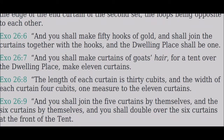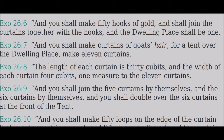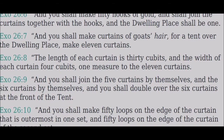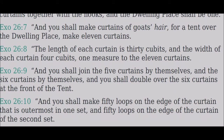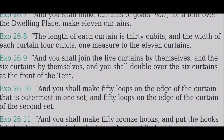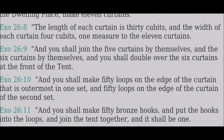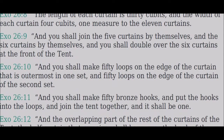Make curtains of goat's hair for a tent over the dwelling place — make eleven curtains. The length of each curtain is thirty cubits, and the width of each curtain four cubits, one measure to the eleven curtains. You shall join five curtains by themselves and six curtains by themselves, and double over the six curtains at the front of the tent.